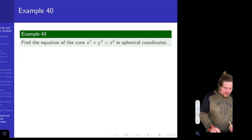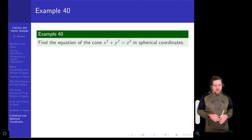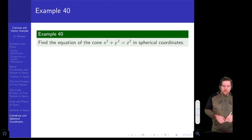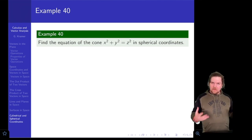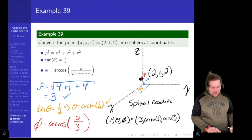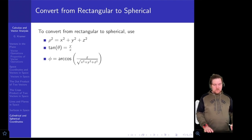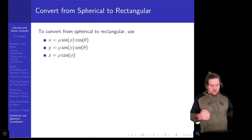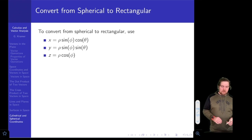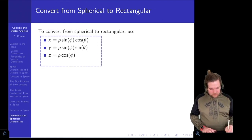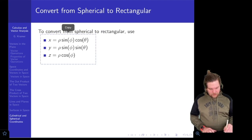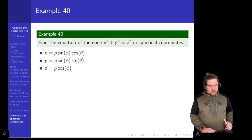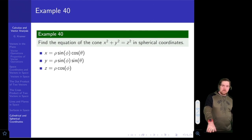The last example is Example 40, where we're asked to find the equation of the cone x squared plus y squared equals z squared in spherical coordinates. We'll need to use the substitutions from spherical to rectangular coordinates. Let me go ahead and include those conversions on the page, then make the substitutions and see what happens.